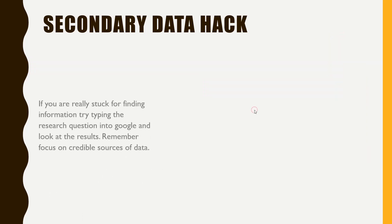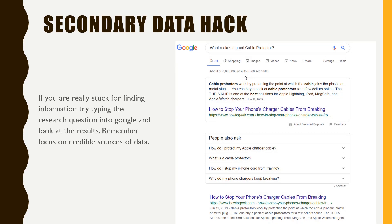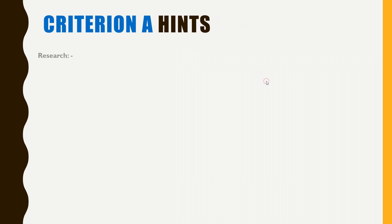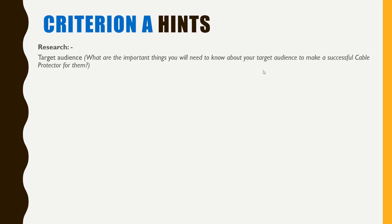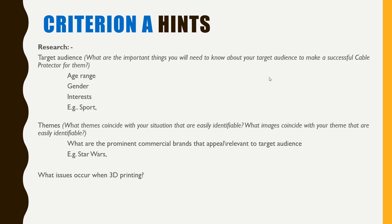For secondary data, if you're stuck for information, simply type your original research question into Google and focus on credible sources. Remember those five research questions and search for relevant data. Some other hints when doing research: identify your target audience — the age range, gender, interests, sport preferences. Consider themes: what themes coincide with your situation, what images are easily identifiable, and what prominent commercial brands appeal to your target audience, such as Star Wars. Also explore issues that occur when you 3D print — the size of the design, how many components connect, the quality of the plastic — there's a whole range of things to research.